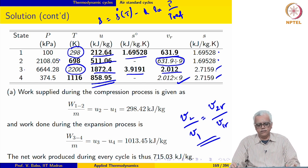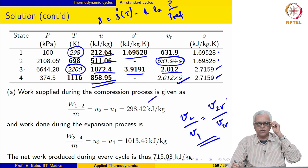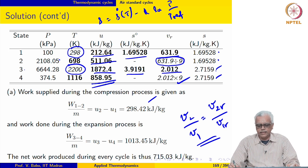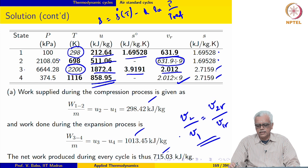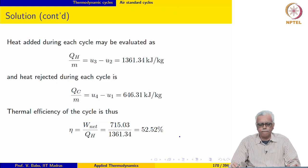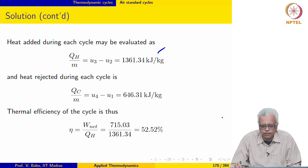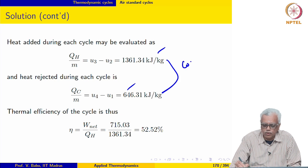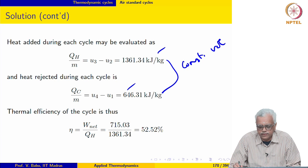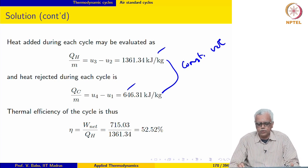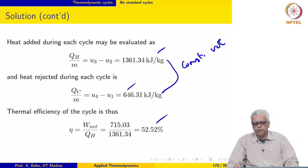Now we carry out the calculations. Specific work supplied during compression is U₂ - U₁. U₄ comes out to 1013 kJ/kg. Net specific work produced per cycle is 715 kJ/kg. Heat added per unit mass is U₃ - U₂ = 1361 kJ/kg. Heat rejected during the constant-volume process is 646.31 kJ/kg. The first law efficiency of the cycle is 52.52%.